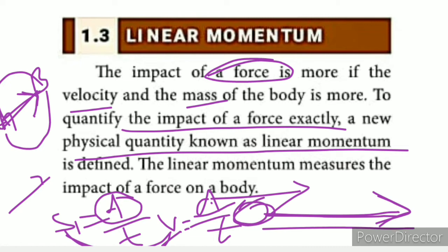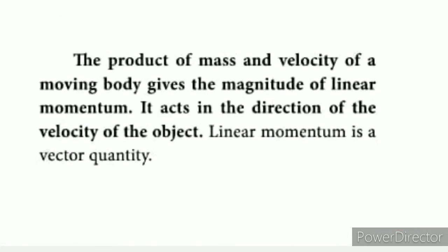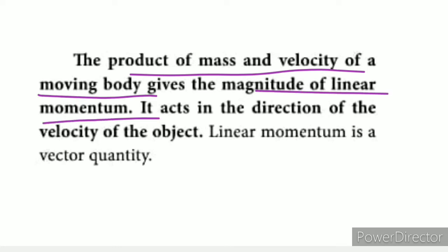Linear means straight line. Linear momentum measures the impact of force on a body. Mathematically, the product of mass and velocity of a moving body gives the magnitude of linear momentum. Product means multiplication — mass multiplied by velocity gives linear momentum.